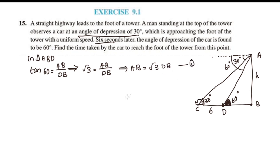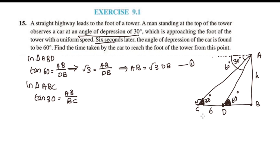In triangle ABC, the angle at C is 30 degrees. AB is the opposite side and CB is the adjacent side. So Tan 30 is equal to AB by BC. Now BC is equal to CD plus DB, which is 6 plus DB. Tan 30 is equal to 1 by root 3, and AB equals AB.